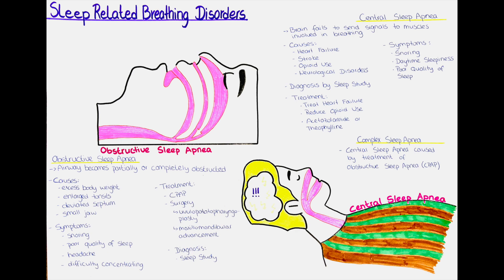The most common cause of obstructive sleep apnea is excess body weight, which can lead to the accumulation of fat deposits around the upper airway, causing it to narrow or collapse during sleep. Other factors that can contribute include structural anomalies in the airway, such as enlarged tonsils, a deviated septum, or a small jaw, which can restrict airflow.